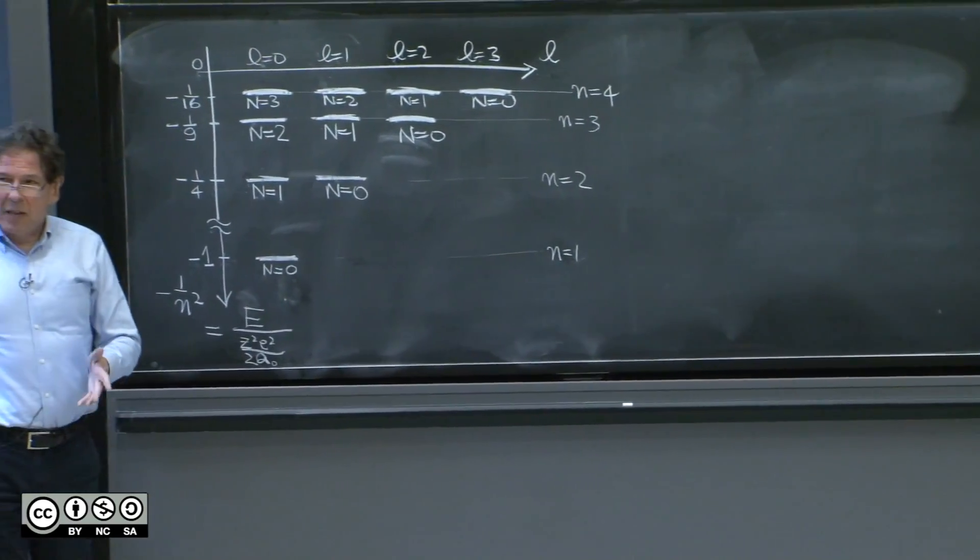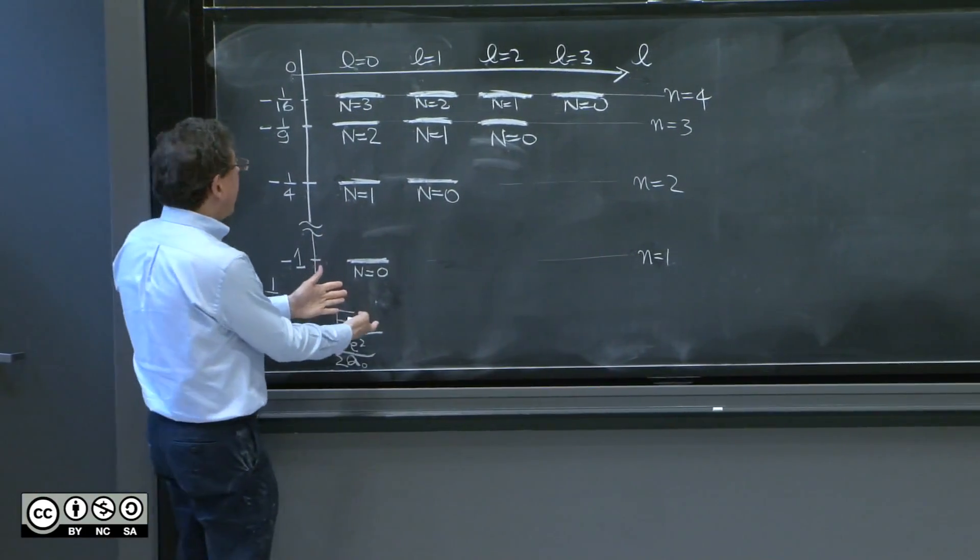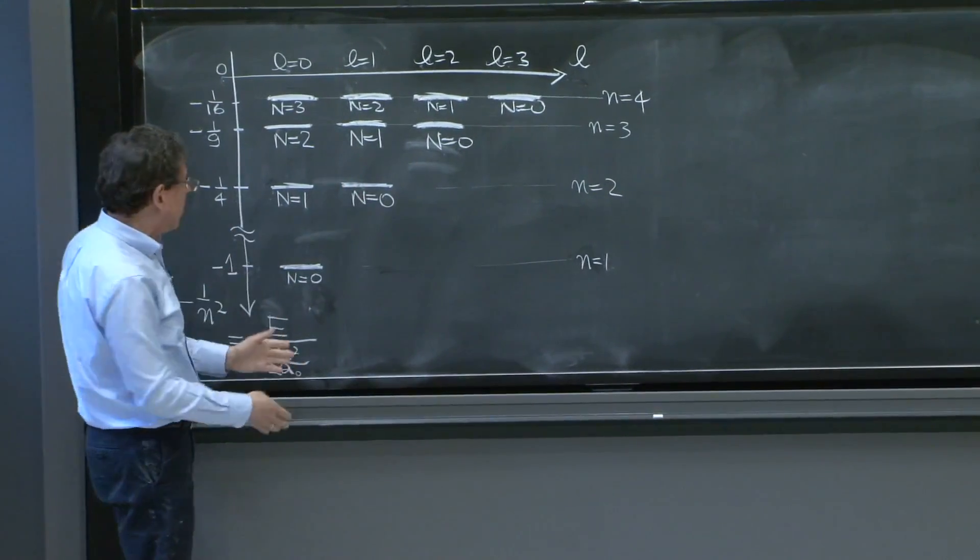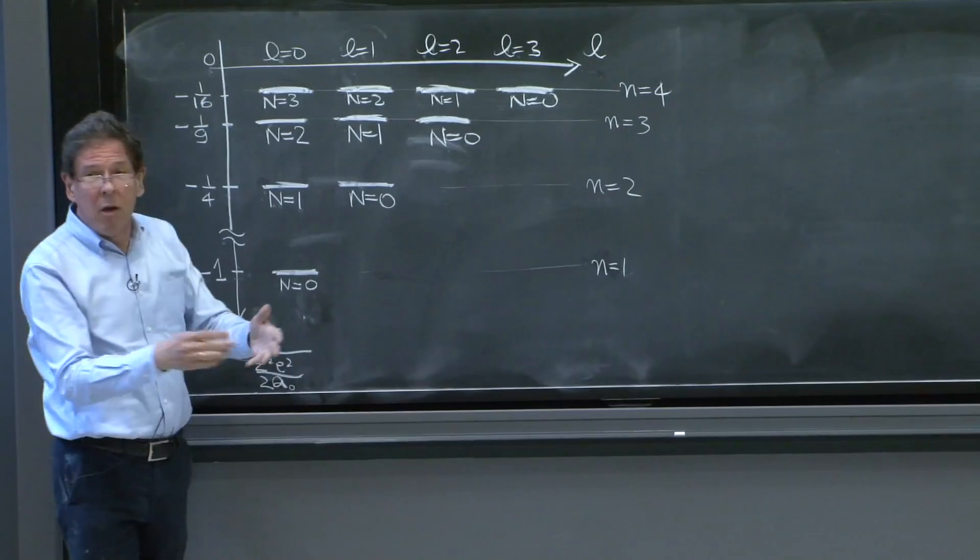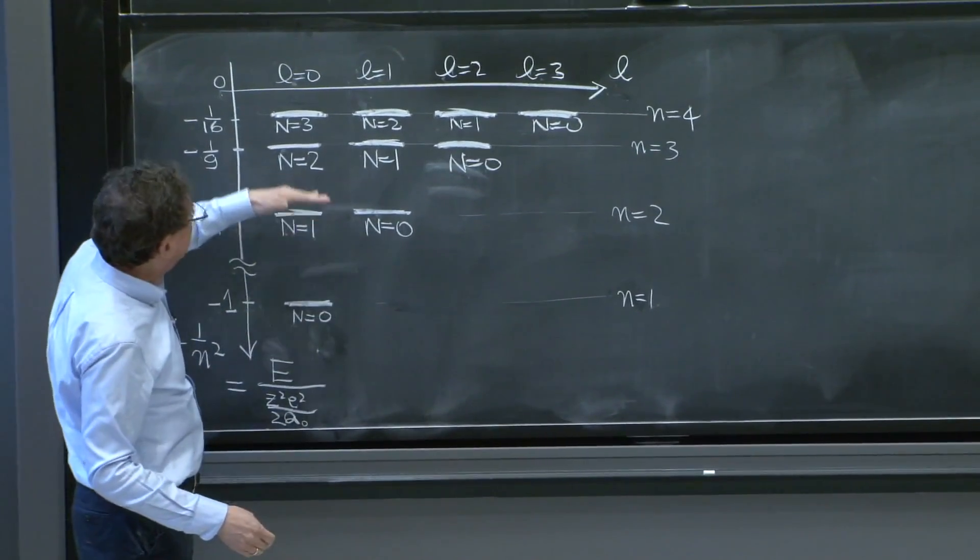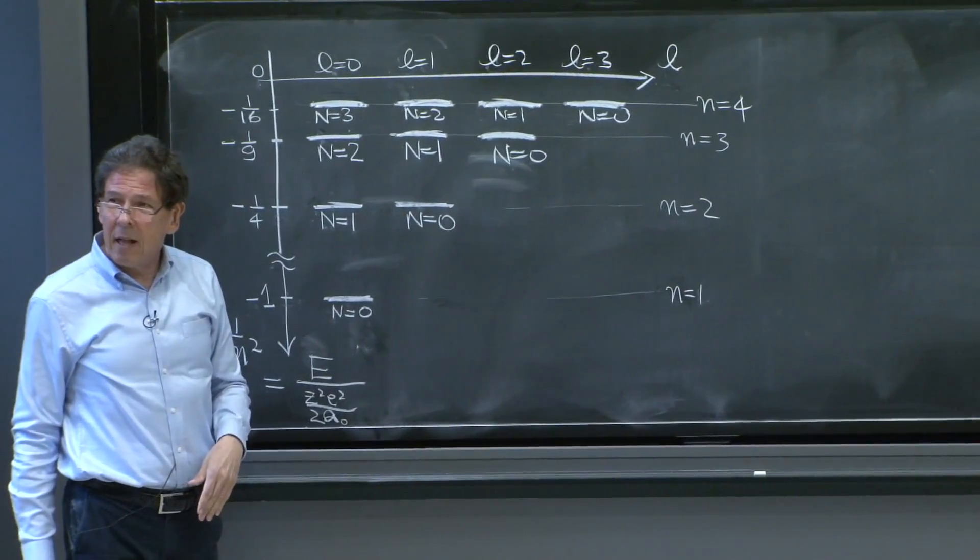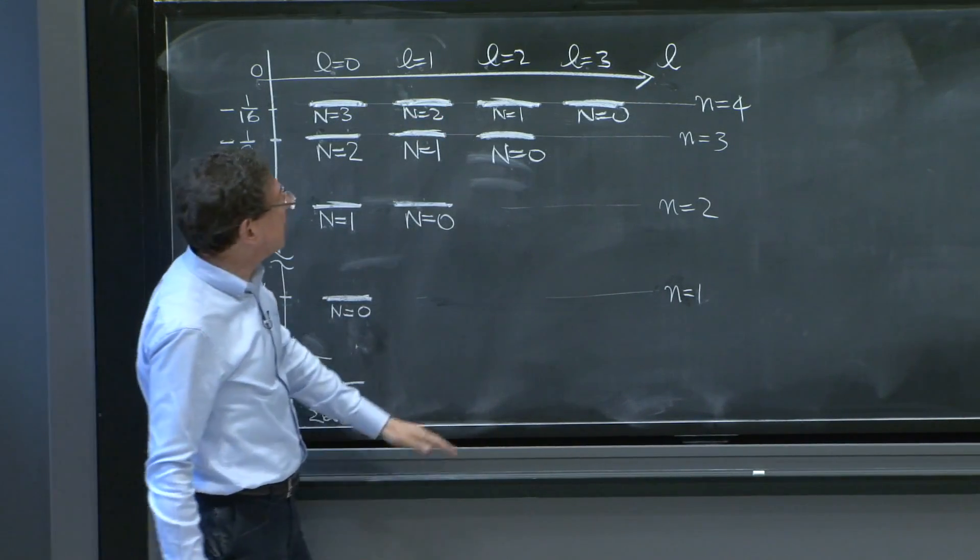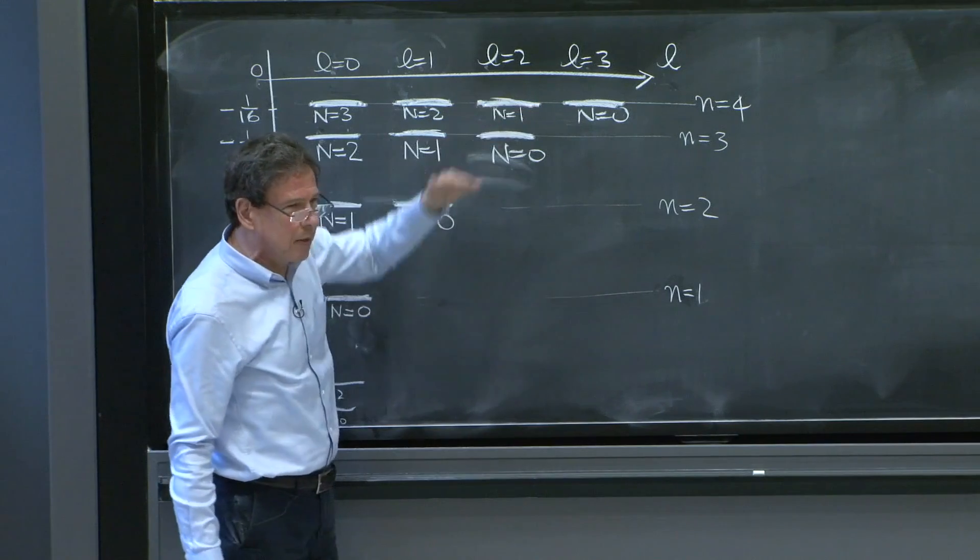If you tell someone, solve this equation for L equals 0, so you have this effective potential for the radial equation, solve it for L equals 0 and you find some energies. You solve it for L equals 1 and you found some energies. You solve it now for L equals 2, and you found some energies.